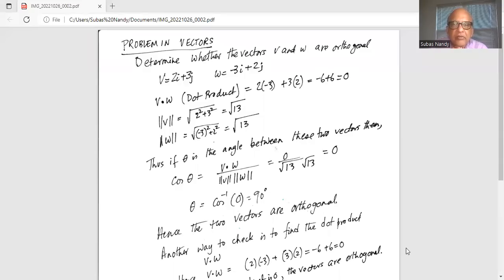Determine whether the vectors v and w are orthogonal. v is given as 2i plus 3j and w is minus 3i plus 2j.